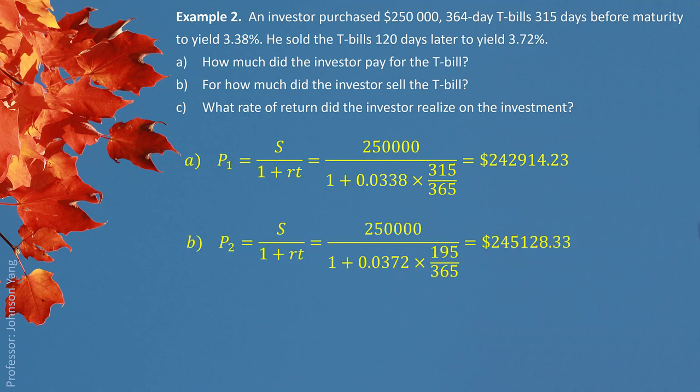Part B: For how much did the investor sell the T-Bill? We need to determine how much time is left until maturity when it was sold. The investor bought 315 days before maturity and held it 120 days, so the leftover for the buyer is 315 minus 120, which gives 195 days. Using 195 days and 3.72% interest rate in the formula, the selling price is $245,128.33.